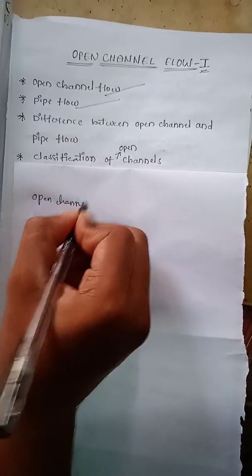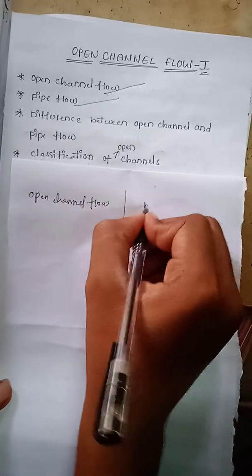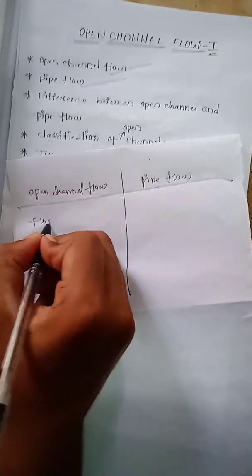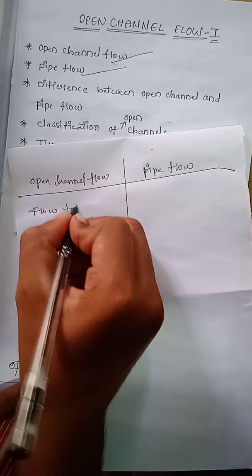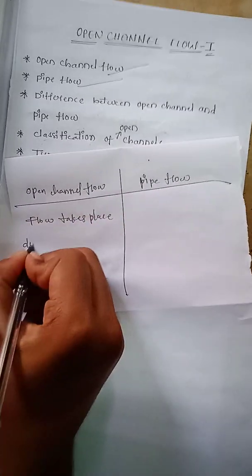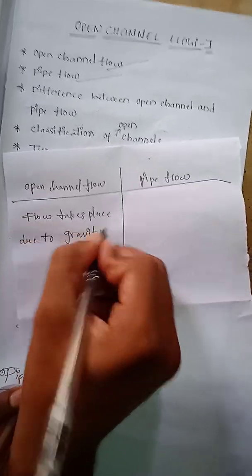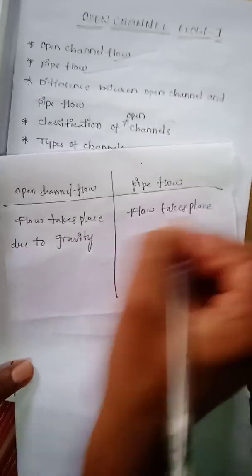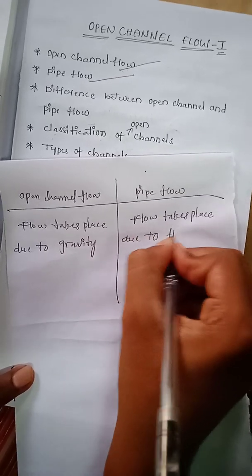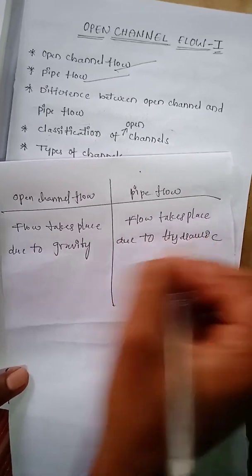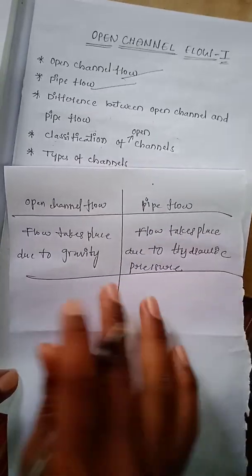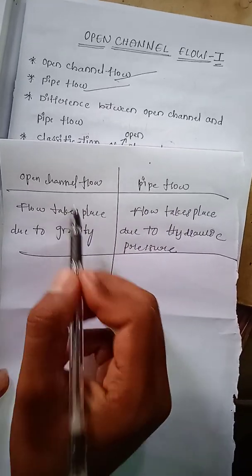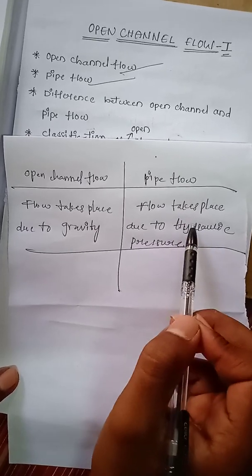In open channel flow, the flow takes place due to gravity. In pipe flow, the flow takes place due to hydraulic pressure. Just now we discussed open channel and pipe flow — in open channel flow the flow takes place due to gravity, whereas in pipe flow it takes place due to hydraulic pressure.